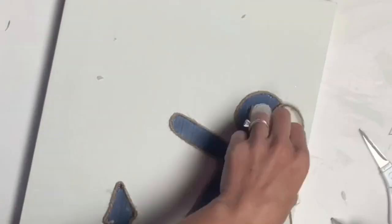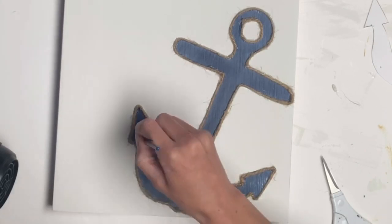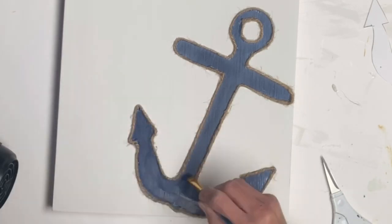You want a thinner piece of jute and then I just took a little more paint and touched up the inside.